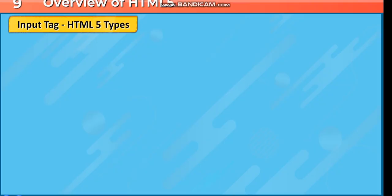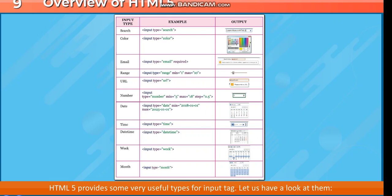HTML5 Input Tag Types. HTML5 provides some very useful types for the input tag. These include: Search — input type equal to search; Color — input type equal to color; Email — input type equal to email, required; Range — input type equal to range, min is equal to 1, max is equal to 10; and URL — input type equal to URL.